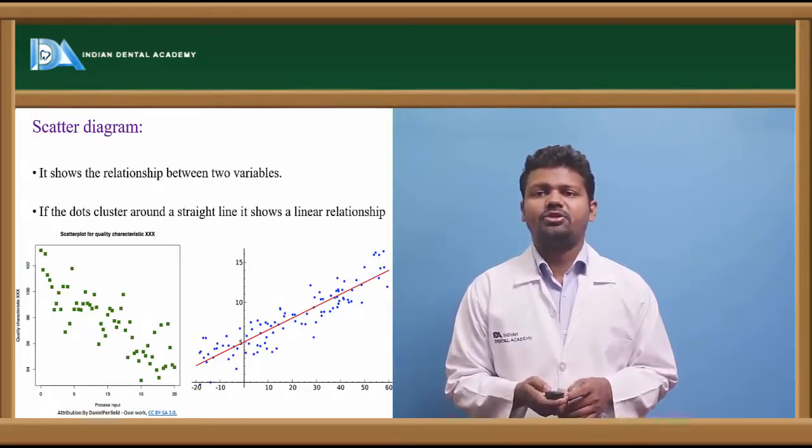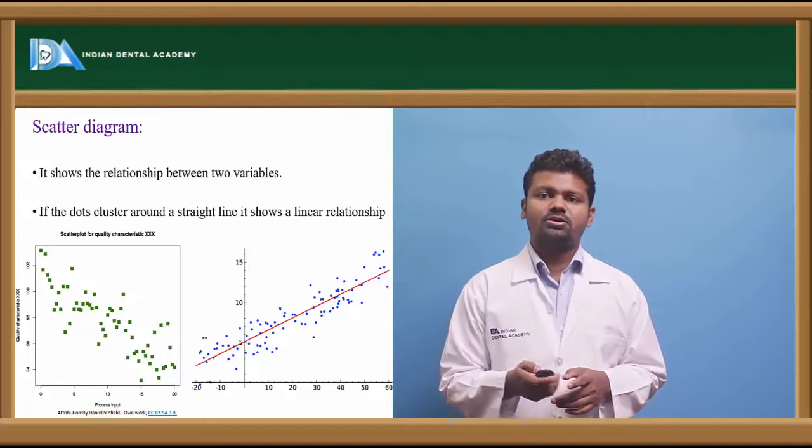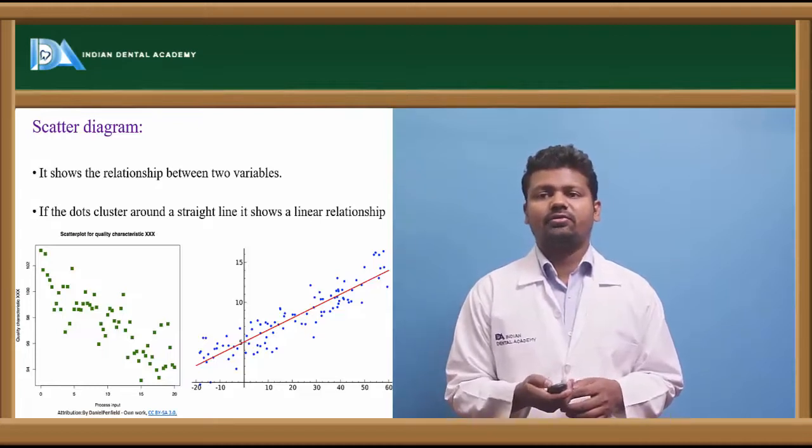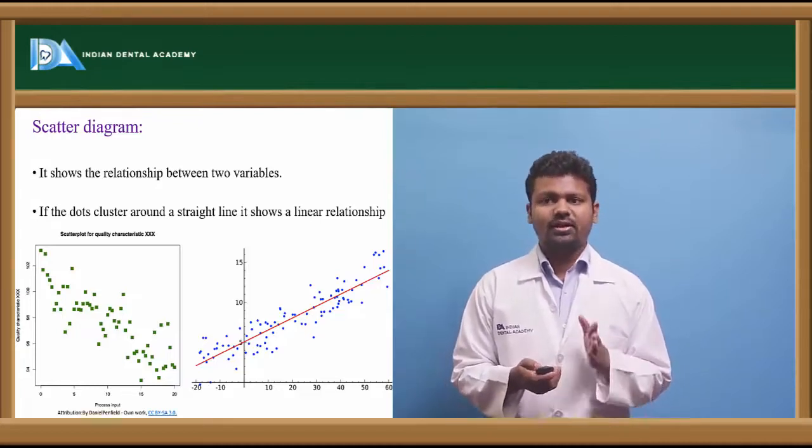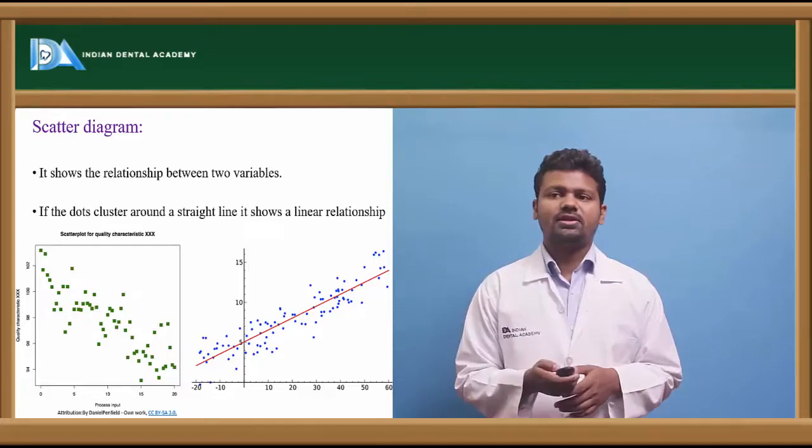The scatter diagram shows the relationship between two variables. If the dots cluster around a straight line, it is called a linear relationship.